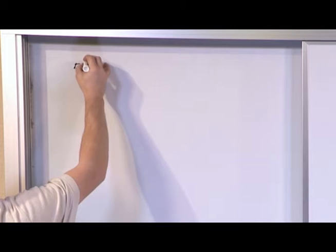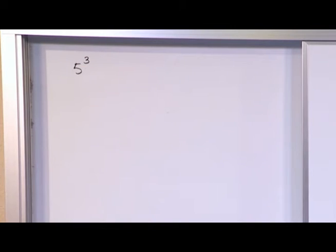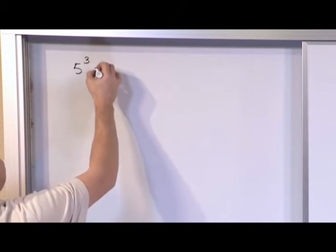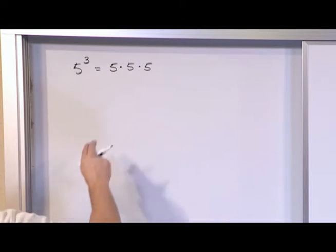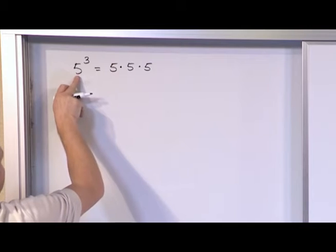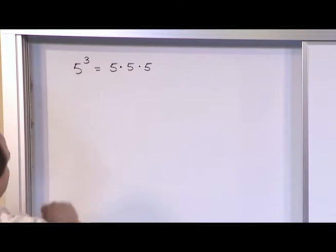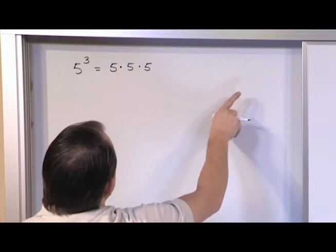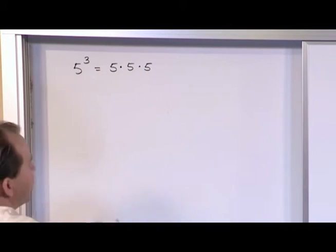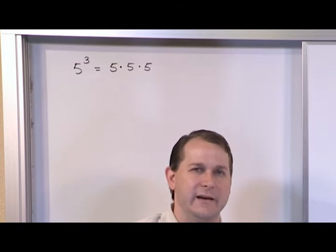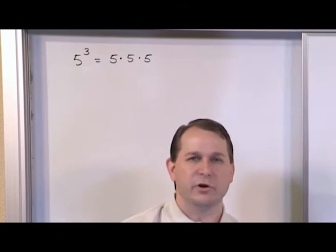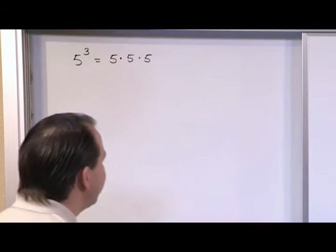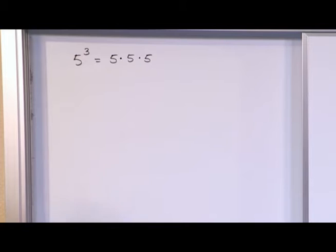Let's do a little bit of a review. When we have something like 5 raised to the power of 3, we already talked about the fact that what this is basically saying is it's 5 times 5 times 5. We multiply the 5 by itself the number of times that the exponent represents. So it's a shorthand way of writing multiplication instead of writing all this out. So when you see exponents, think: that's just multiplication. That's all that exponent is — hopefully that breaks down some fears.